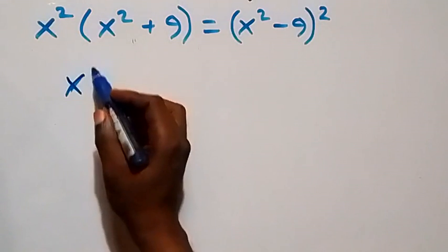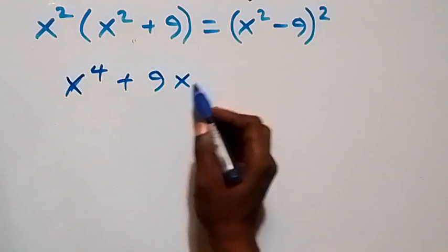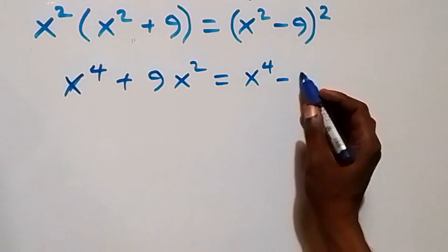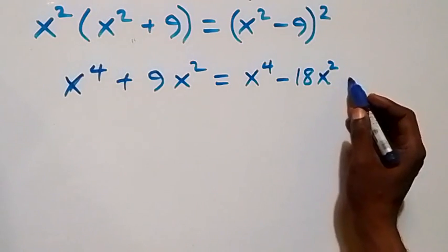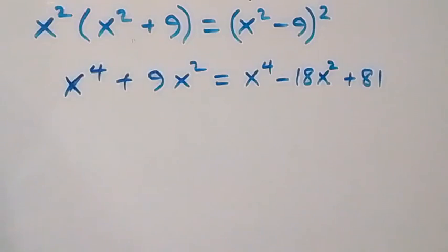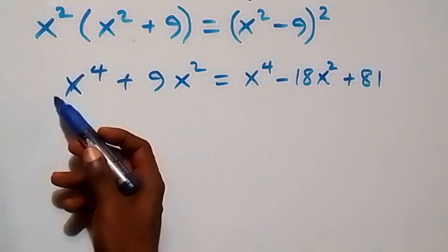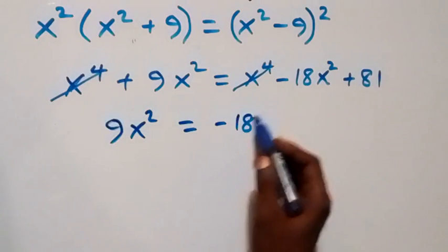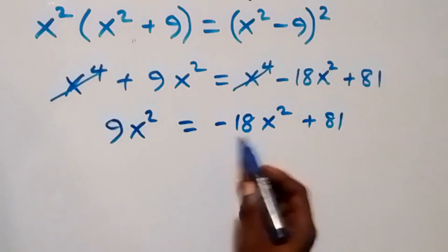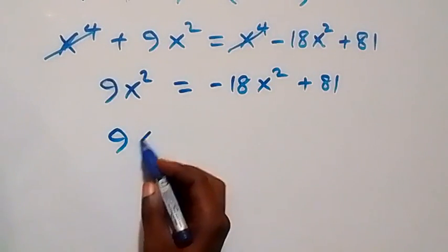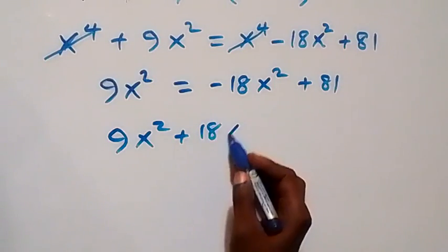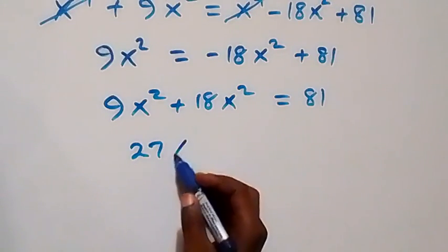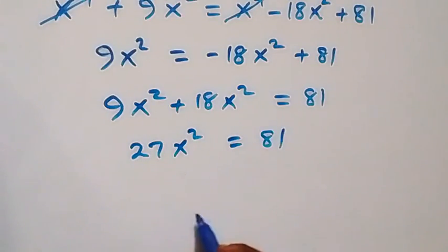Expanding the left: x⁴ + 9x². Expanding the right: x⁴ - 18x² + 81. Subtracting x⁴ from both sides, we get 9x² = -18x² + 81, so 9x² + 18x² = 81, giving 27x² = 81.